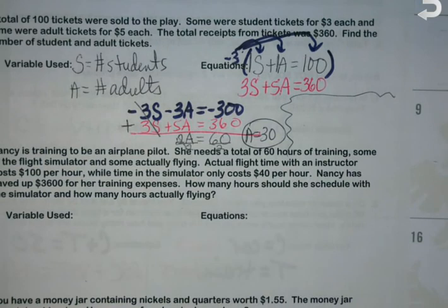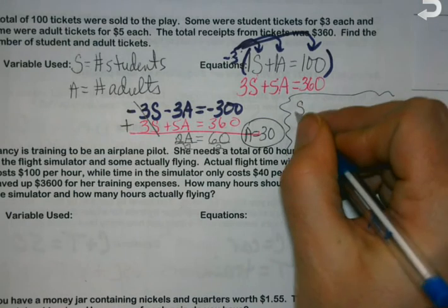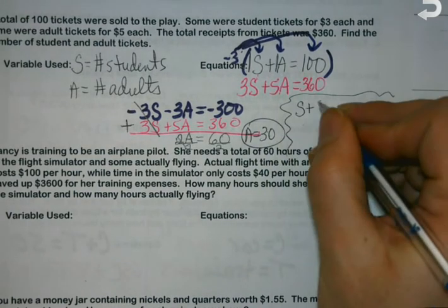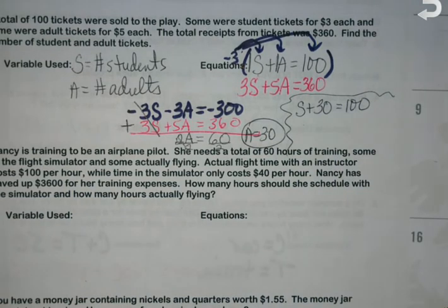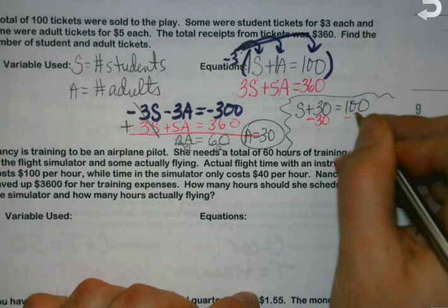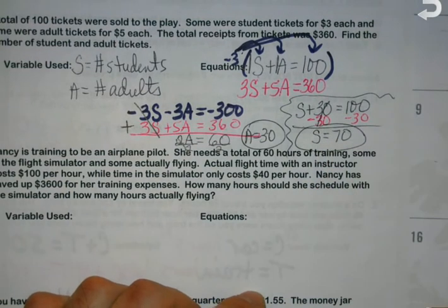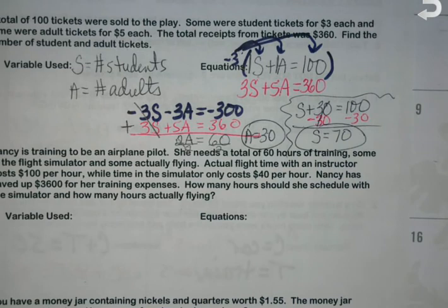When I add them together, my S will cancel. Negative three plus five would be two A. Negative three hundred plus three sixty is sixty. One step left, divide by two. So I know I have thirty adult tickets. If student plus adult tickets is a hundred, I know that there are thirty adults, so I plug that in for A. S plus 30 equals 100, so S equals 70. My two numbers add up to a hundred, so I'm pretty confident that I've done this right.